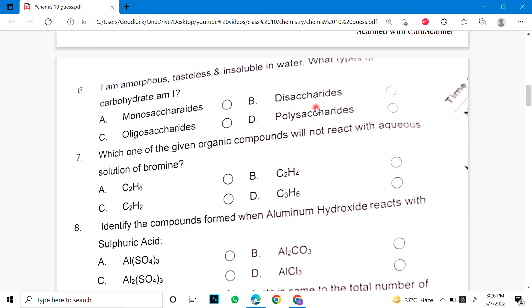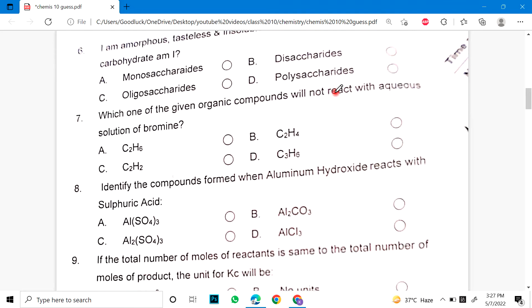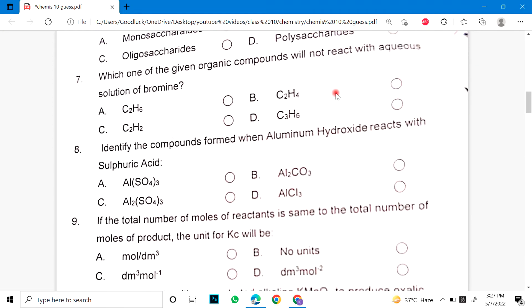Sixth is I am amorphous, tasteless and insoluble in water. What type of carbohydrate am I? Number 7. Which of the given organic compounds will not react with aqueous solution of bromine? Number 8.